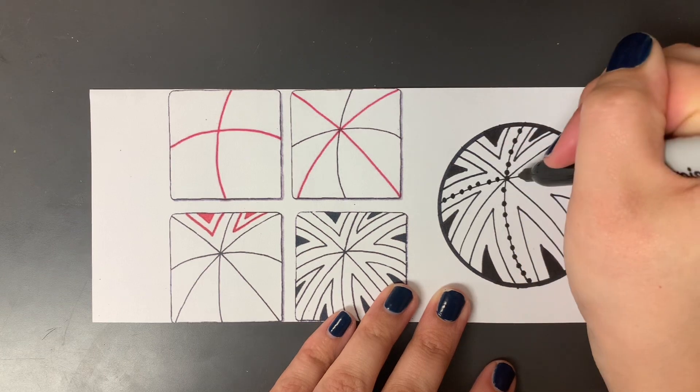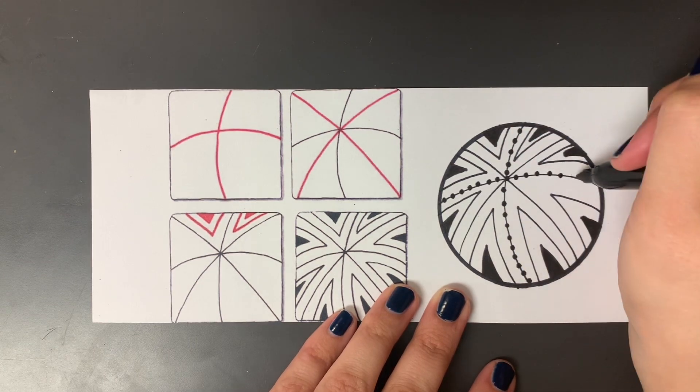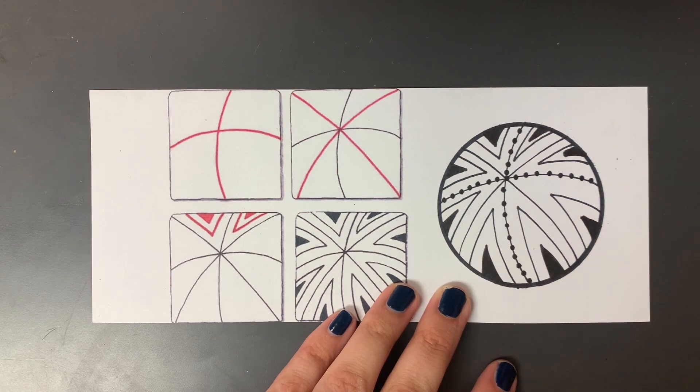When my students do Zentangle patterns I usually ask for them to try to have half of it colored in and half of it left plain.